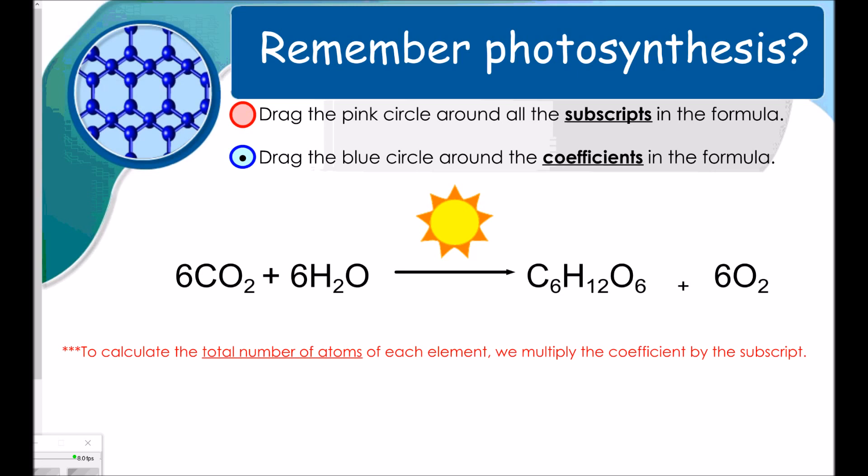To be able to prove the law of conservation of mass, we need to be able to calculate the total number of atoms of each element on both sides of our reaction. So to do that, you need to know the difference between a subscript and a coefficient. It says, drag the pink circle around all the subscripts in the formula. So our subscripts are these guys. It sounds like submarine, right? It means below, sub, below. And then drag the blue circle around the coefficients in the formula. The coefficients are these big numbers in front of the entire molecule. Notice that in this one, there isn't a coefficient. It's understood that this is a 1.